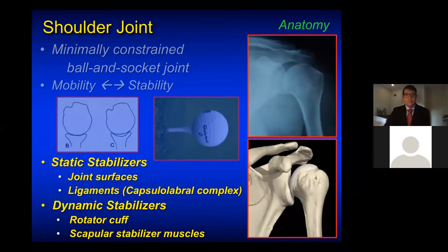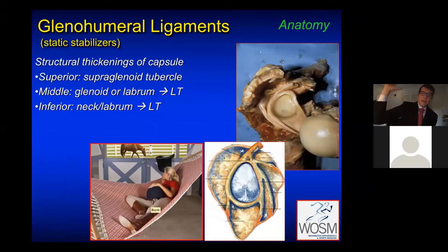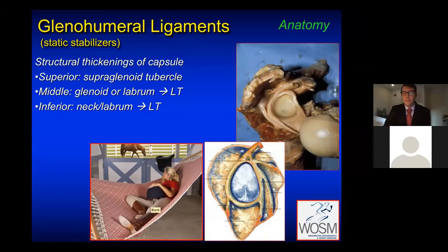There are static stabilizers, which are the joint surfaces and the ligaments, and dynamic stabilizers, such as the rotator cuff and the muscles that help to keep our shoulder blade in position. The ligaments are structural thickenings of the capsule — like a hammock at the bottom with a dry-fit t-shirt that you'd wear to work out in, very compliant or stretchy. When I come back to throw a baseball, the ligaments in the front tighten, and when I go to block somebody in football, the ligaments in the back tighten, providing stability to this intrinsically unstable joint.